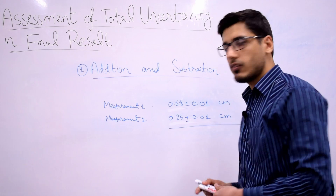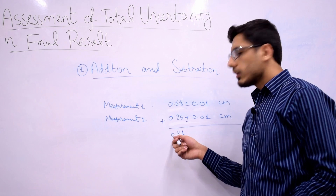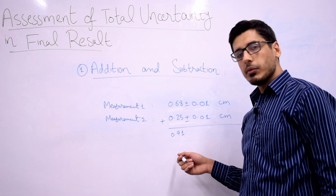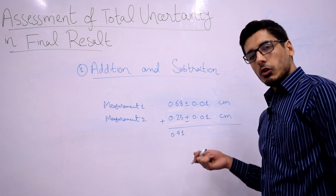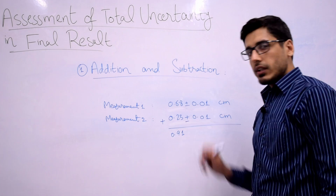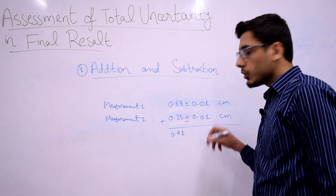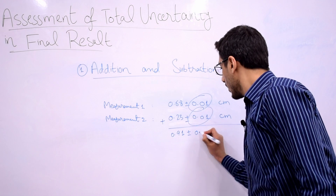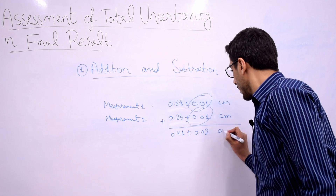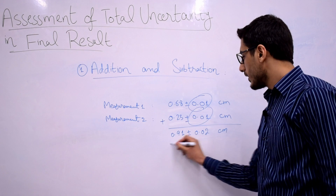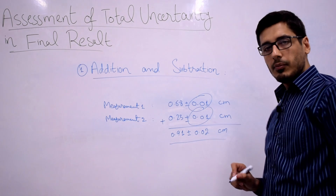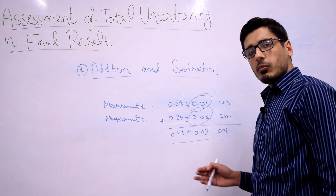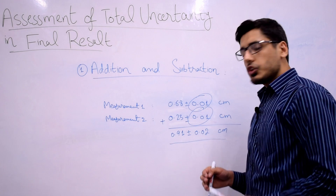Now let's add these two measurements. The result of adding 0.68 and 0.23 is 0.91 cm. Again, following the rule for addition and subtraction, I add the absolute uncertainties: 0.01 + 0.01 = 0.02. So the final result is 0.91 ± 0.02 cm.